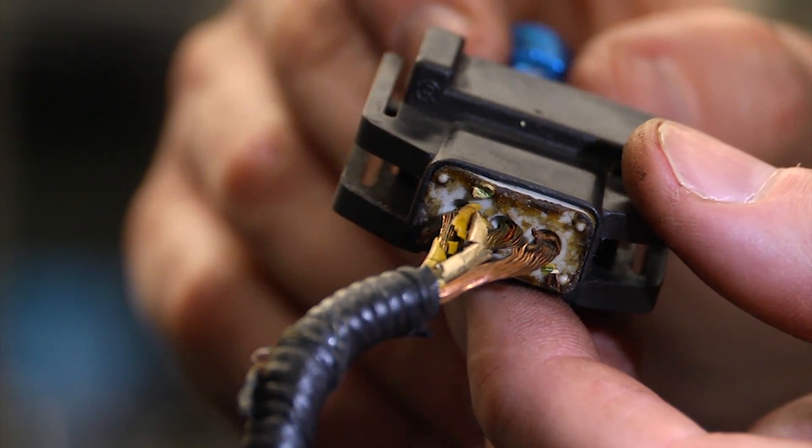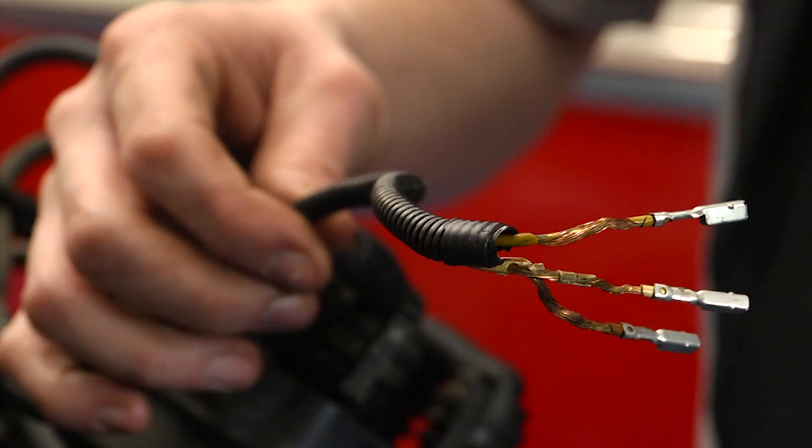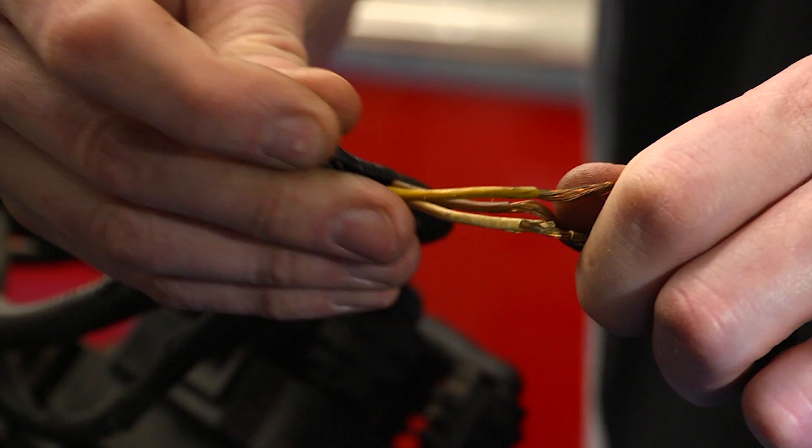Heat shrink tubing means that safe and effective repairs can be made to even badly damaged insulation, provided the wiring and connectors are sound.